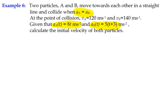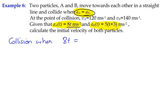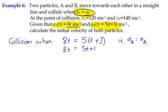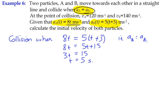We know that the accelerations are the same at the point of contact, and we have two functions. We know that if the acceleration of A was 8t, we can say that the collision happens when the acceleration of A is equal to the acceleration of B. Solving that simple equation tells us that the collision happened when t equals five seconds.